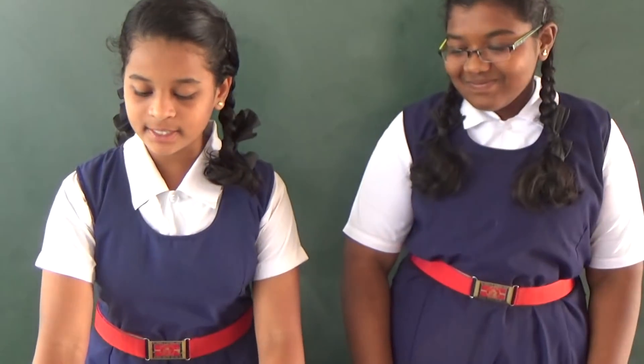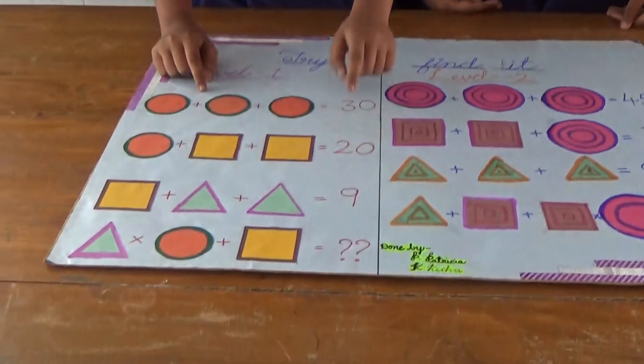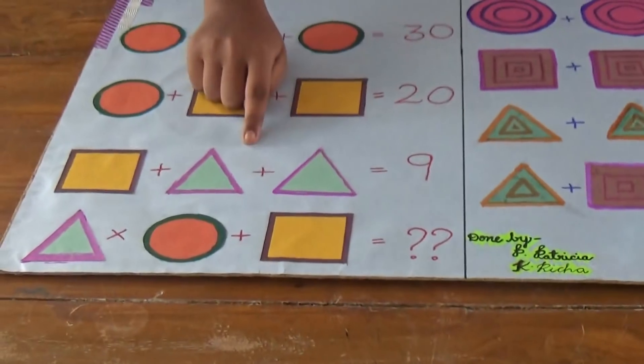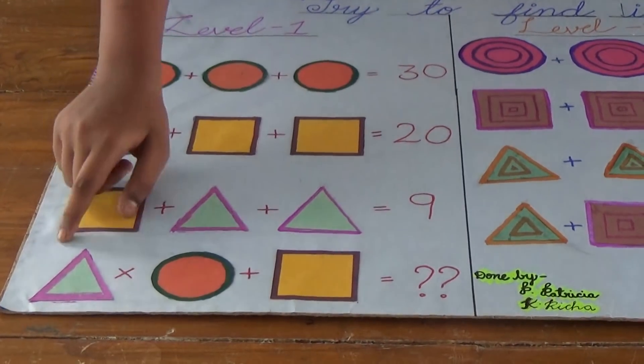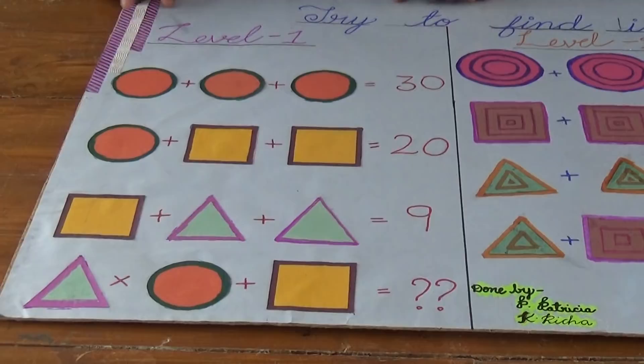The addition of 1 circle and 2 squares is 20, and the addition of 1 square and 2 triangles is 9. By seeing this, you can find out the value of the 3 shapes and solve the last equation.